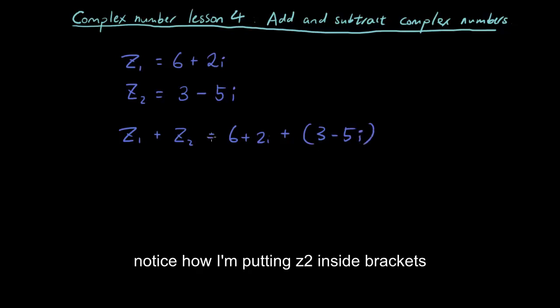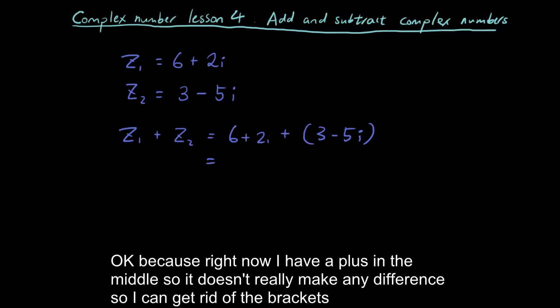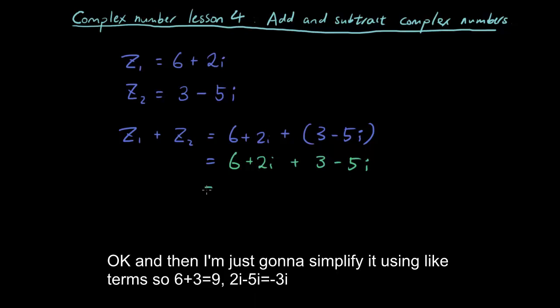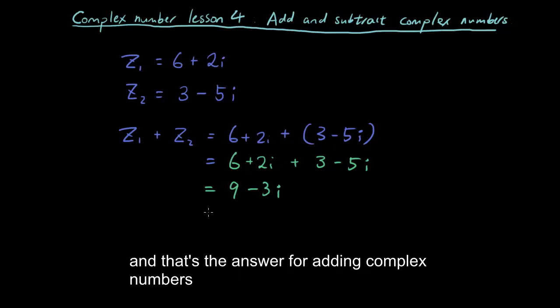Notice how I'm putting z2 inside brackets. OK, because right now I have a plus in the middle so it doesn't really make any difference, so I can get rid of the brackets. OK, and then I'm just going to simplify it using like terms. So 6 plus 3 is 9. 2i minus 5i is negative 3i. And that's the answer for adding complex numbers.